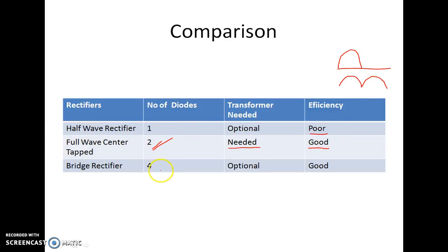In case of bridge, the number of diodes have increased, that is four, but the transformer requirement has been reduced in this case giving a full wave efficiency which is good.